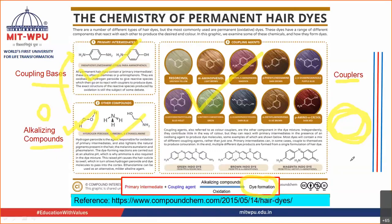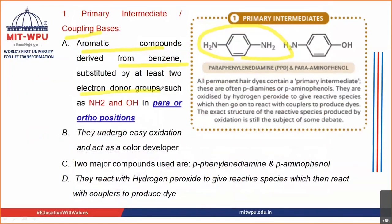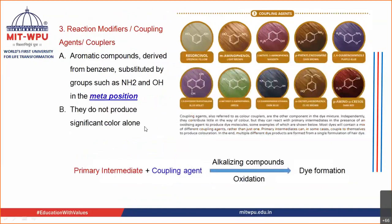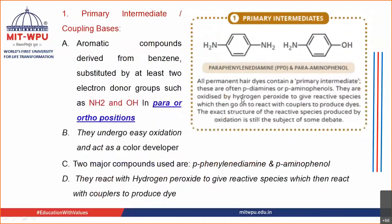The first compound — primary intermediates, also known as coupling basis — are basically aromatic compounds derived from benzene. They consist of two electron donor groups: NH2 and OH. They are basically present in the para position. They undergo easy oxidation and act as a color developer. Two major compounds are paraphenylenediamine (PPD) and paraaminophenol (PAP) — they can be used as primary intermediates. Whereas the coupling compounds at the ortho or meta position do not undergo easy oxidation.